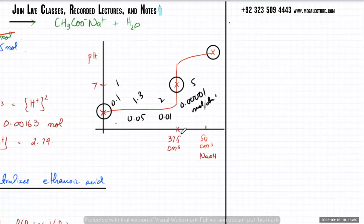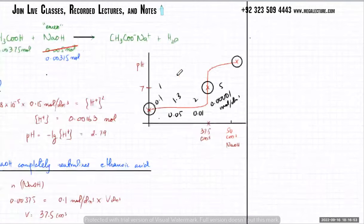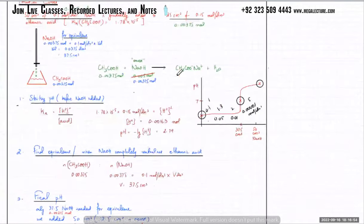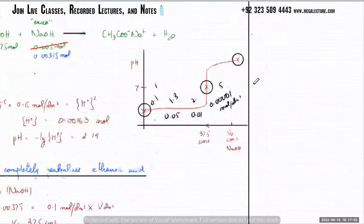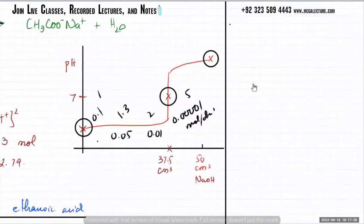A student asks: is the straight line the half of the equivalence point? The teacher clarifies: that was the neutralization point, which we did yesterday. They won't ask for an explanation of the S-shape — they'll talk about the curve but not ask you to explain it. I just wanted to explain to you why it is S-shaped.